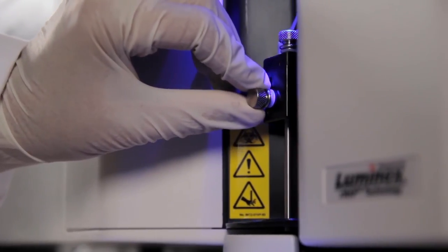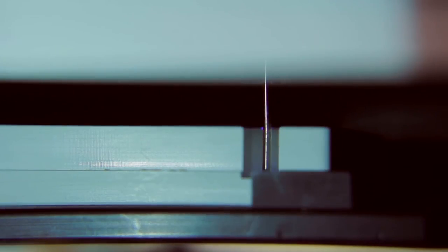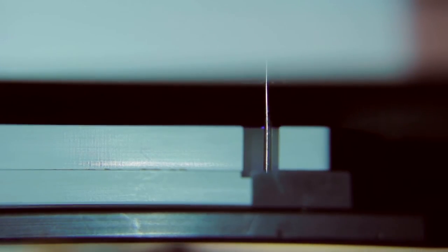Move the needle manually so that it just touches the bottom of the needle adjustment well. Gently move it up and down a couple times to verify that it is barely touching the bottom of the well.